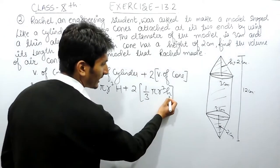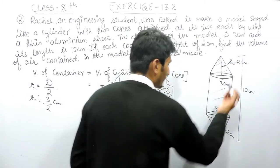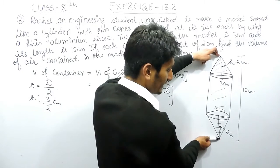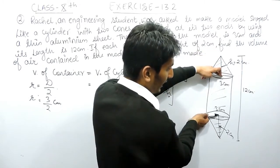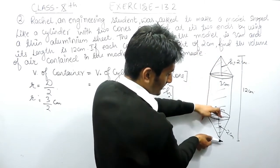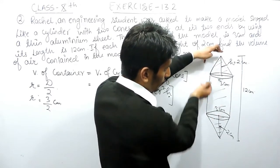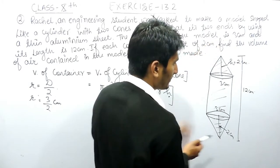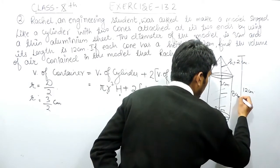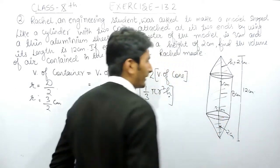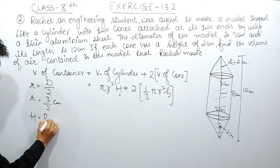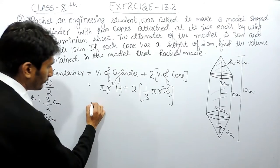The height of each cone is already given as 2 cm. The complete height of this solid figure is 12 cm. To find the height of the cylinder, subtract the heights of both cones: 2 + 2 = 4 cm. So the height of the cylinder is 12 − 4 = 8 cm.